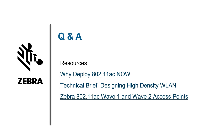A question about channel bonding: if we use 40 MHz on the 5 GHz side and an AP is on channel 36, does it use both channel 36 and channel 40? Yes, exactly. With 40 MHz bonding, the two channels must be adjacent — so 36 and 40, then 44 and 48, and so on. For 80 MHz, you'd need channels 36, 40, 44, and 48 all adjacent. As you use wider and wider channel widths, you run out of channels to combine — which is again why 40 MHz is the sweet spot.